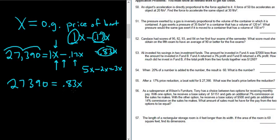We're looking for X. It's being multiplied by 0.83, so all we have to do is divide by 0.83. So you end up with X equals this number here. I'm going to put it into my calculator. 27,390 divided by 0.83. I got $33,000.